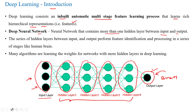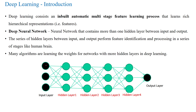Each and every hidden layer is learning features from the given input image. The hidden layers between input and output perform feature identification, processing in a series of stages like the human brain. Many deep learning algorithms learn the weights of the network across multiple hidden layers. Each connection between two layers is associated with weights, which control the flow of information between layers in the deep learning network.